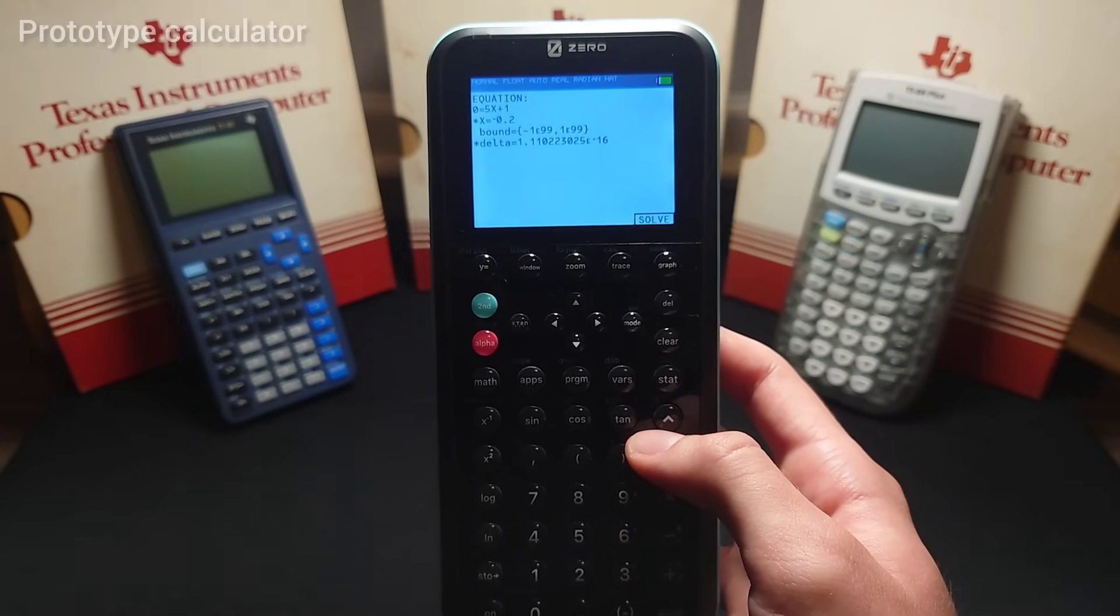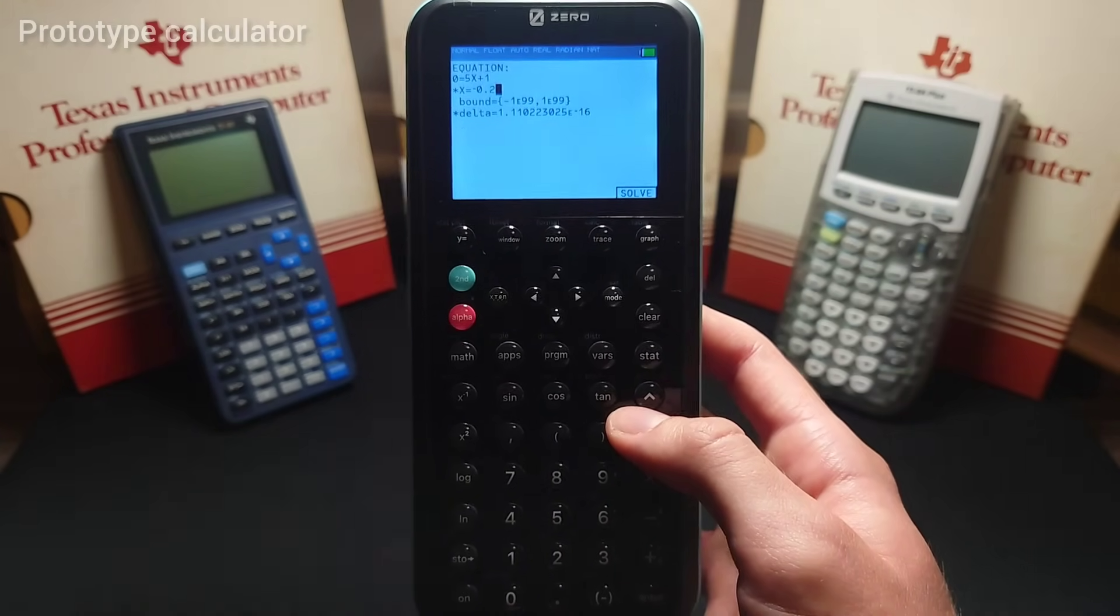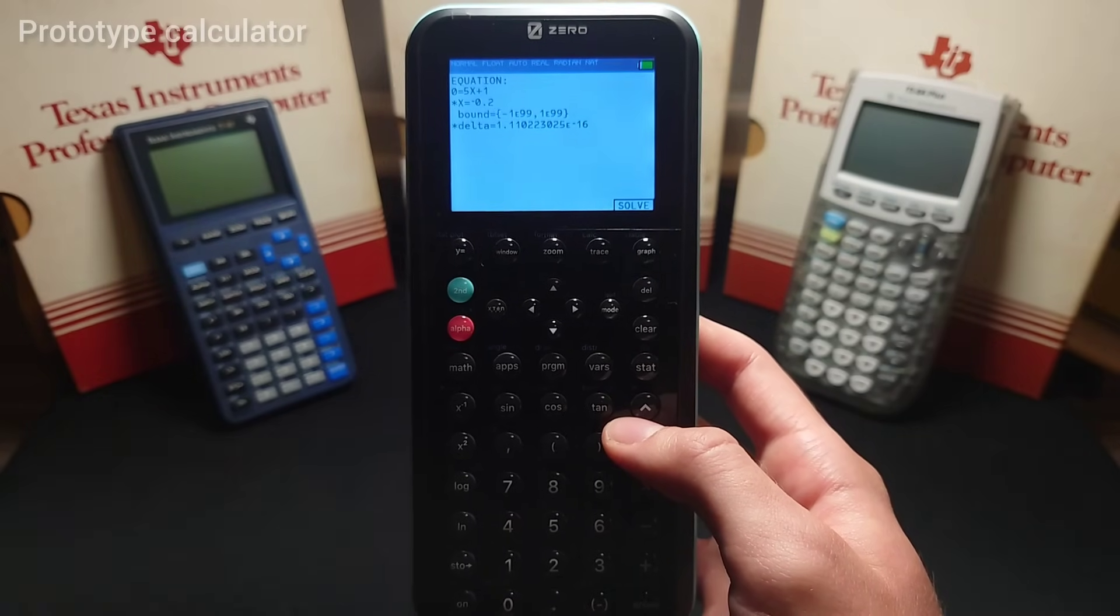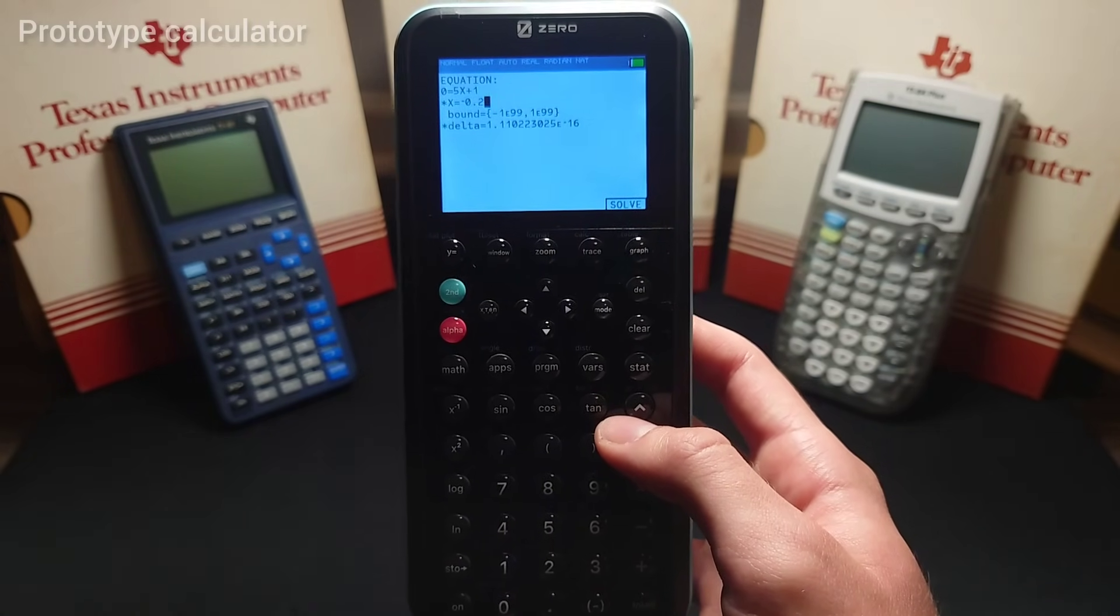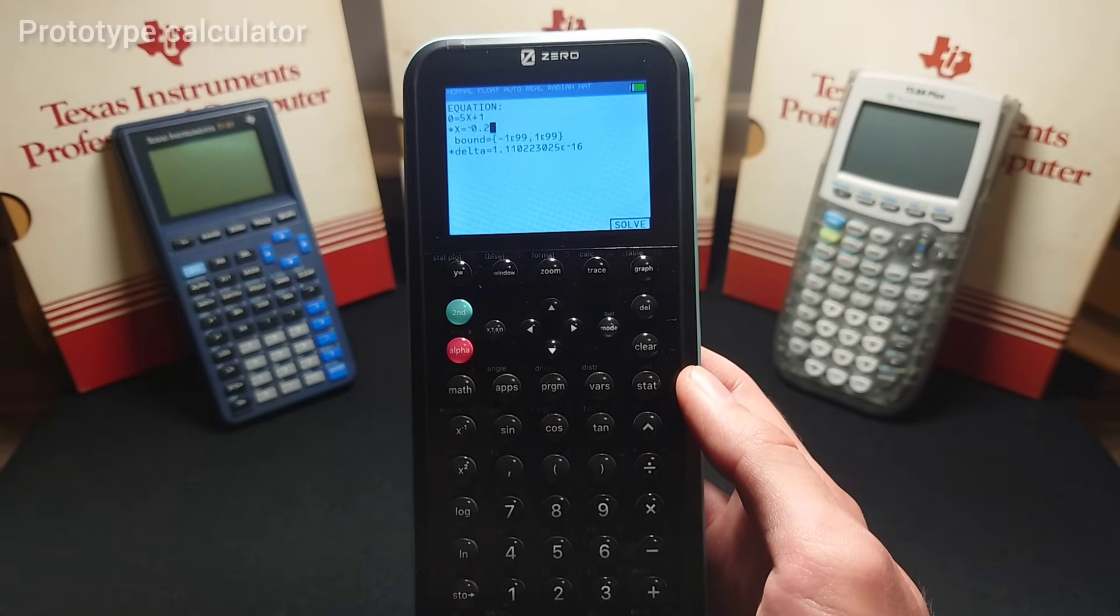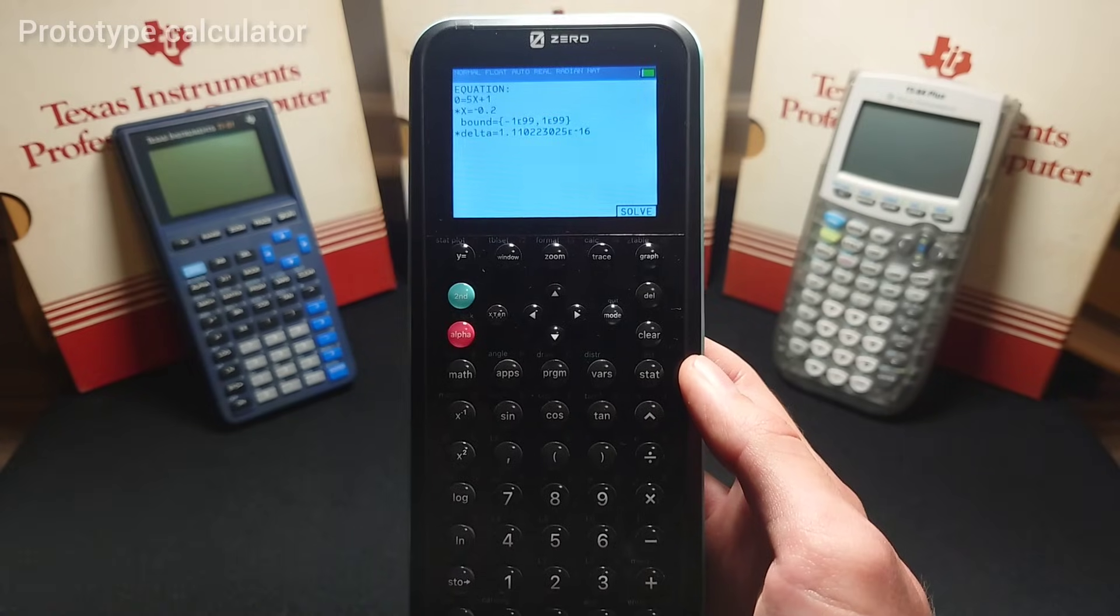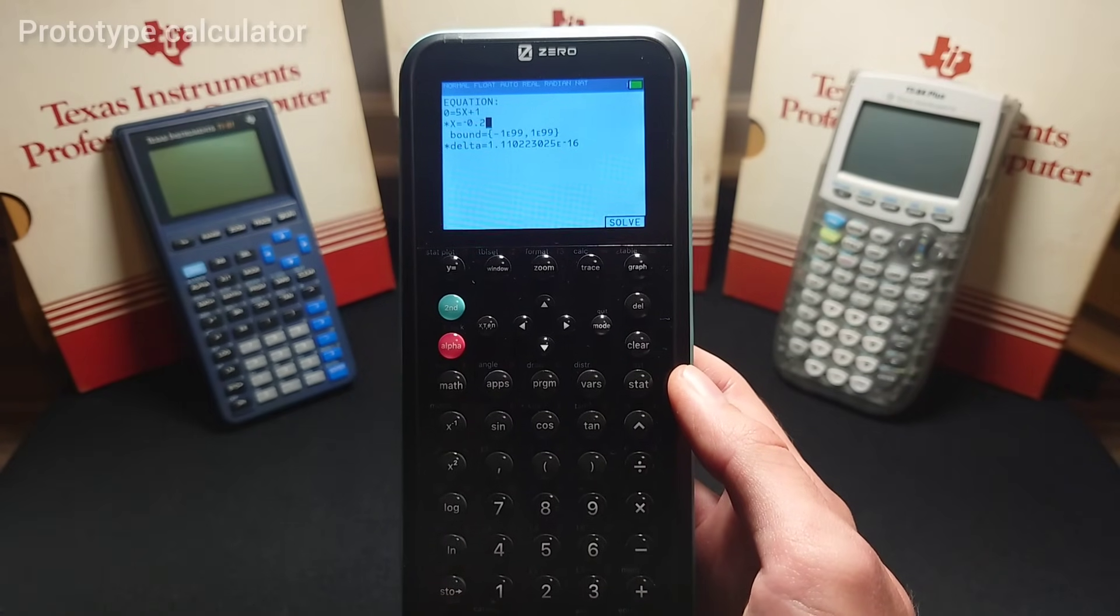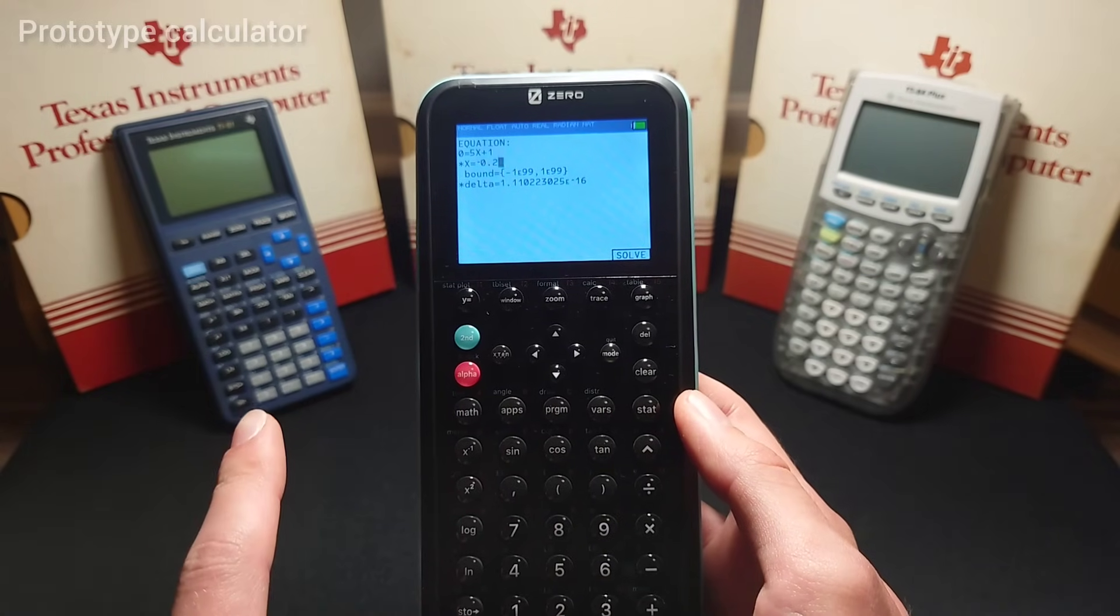It also does not come with reverse Polish notation, which if you've never heard of before, you probably won't ever care. But for those who do care about RPN, this is not the calculator for you. Now lastly, I'm sure you're wondering what the price is going to be. Fortunately, I don't have an answer for you yet. However, I understand the goal is to be less expensive than a TI-84 plus CE. However, I can assure you this will not be a cheap calculator.